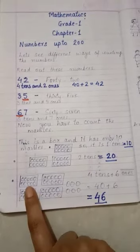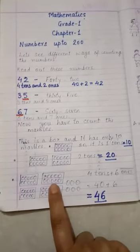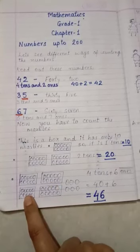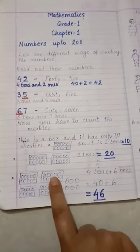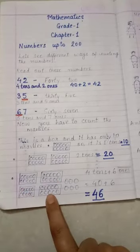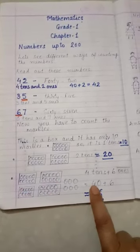Now, the next one, 10, 20, 30, 40. That is, 1 tens, 2 tens, 3 tens, 4 tens. 4 tens equals to 40.